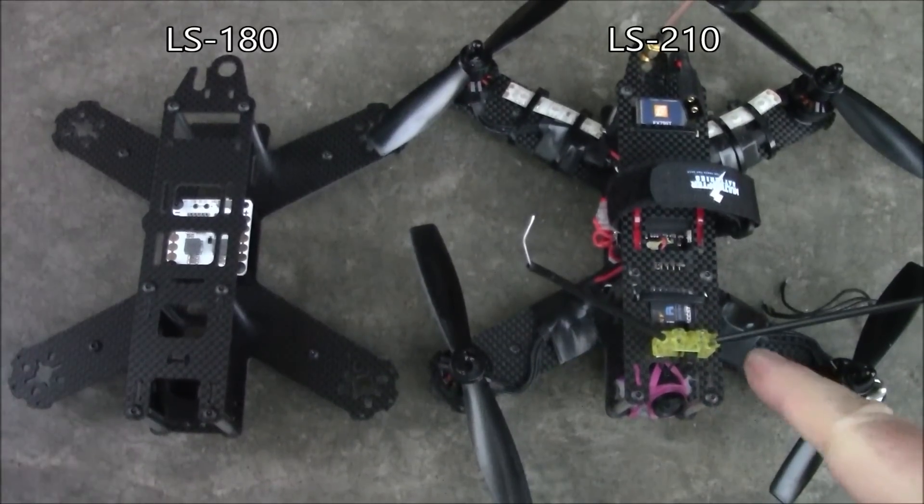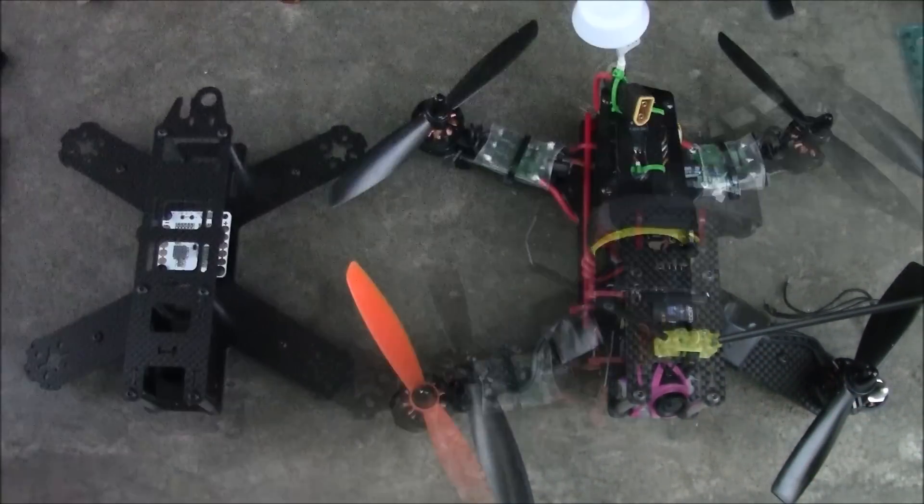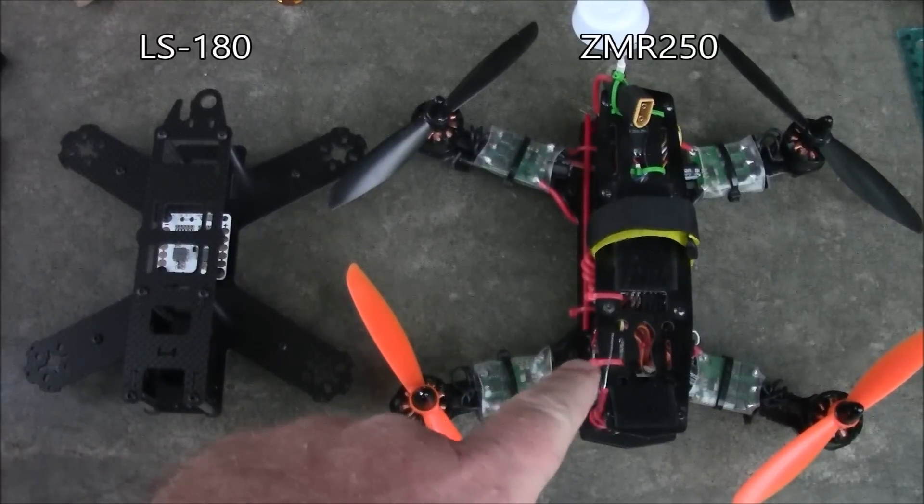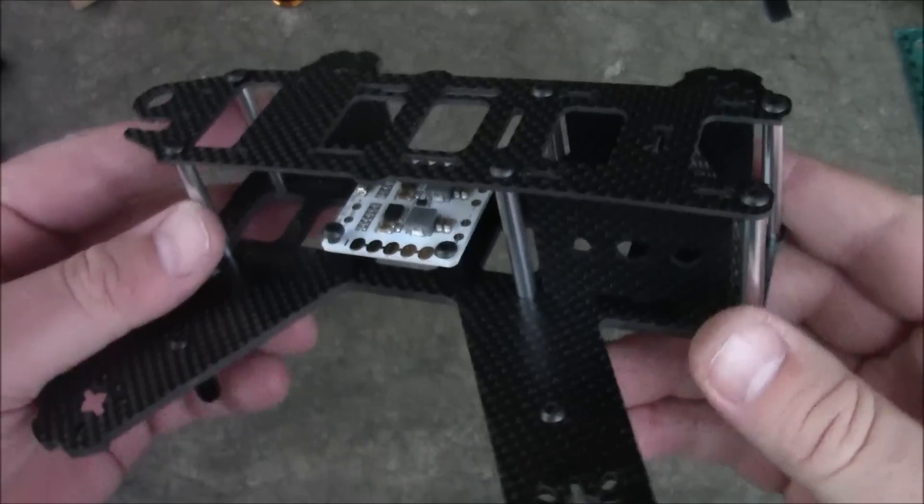So here's the LS 180 next to its big brother the LS 210. And if they're sitting here it's hard to notice a big difference. Here's the LS 180 sitting next to the ZMR 250. Easily tell the difference between these two.